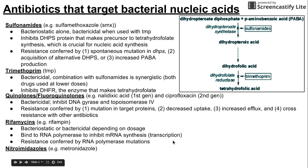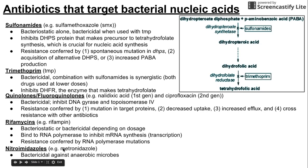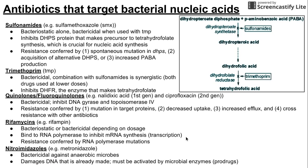One of the last groups is nitroimidazoles, and one example is metronidazole. These are bactericidal and unique in that they work against anaerobic microbes. They damage DNA that is already made — existing DNA in the cell. Nitroimidazoles must be activated by enzymes within the bacteria; they are prodrugs, administered as inactive molecules that become active inside the bacteria when activated by microbial enzymes.